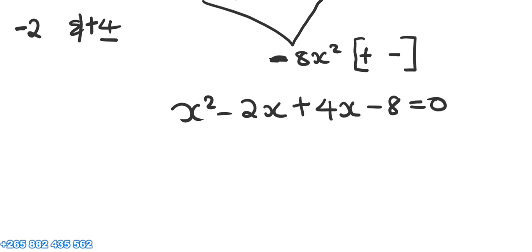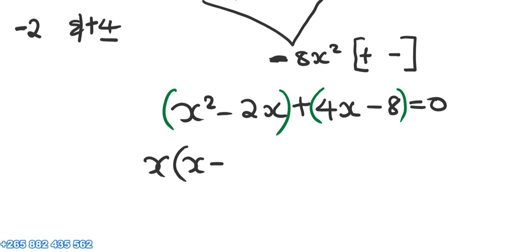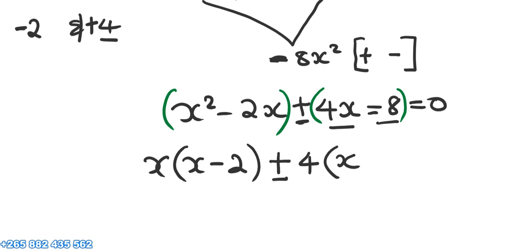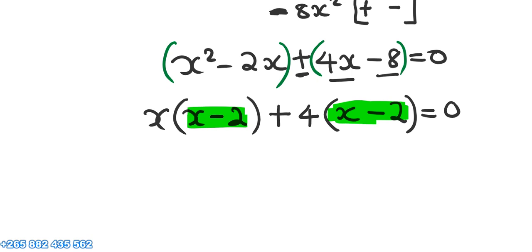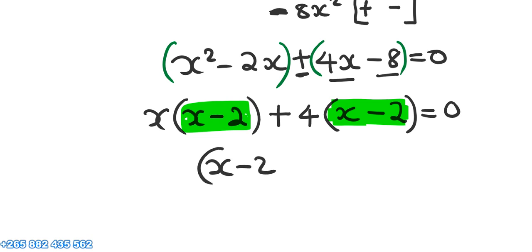If we add them, it's a positive 2. The next thing we do is to group. We find the common factor in each bracket. In the first bracket, the common factor is x: x(x minus 2). In the second bracket, we take out 4: 4(x minus 2). So we pick one bracket which is (x minus 2).